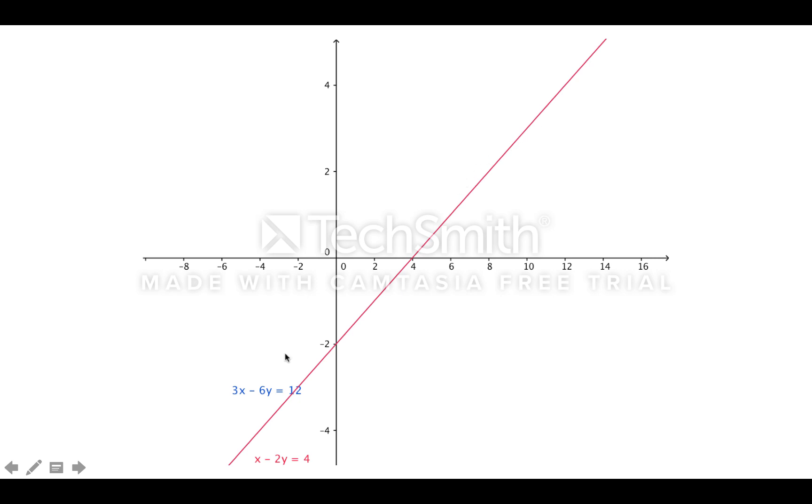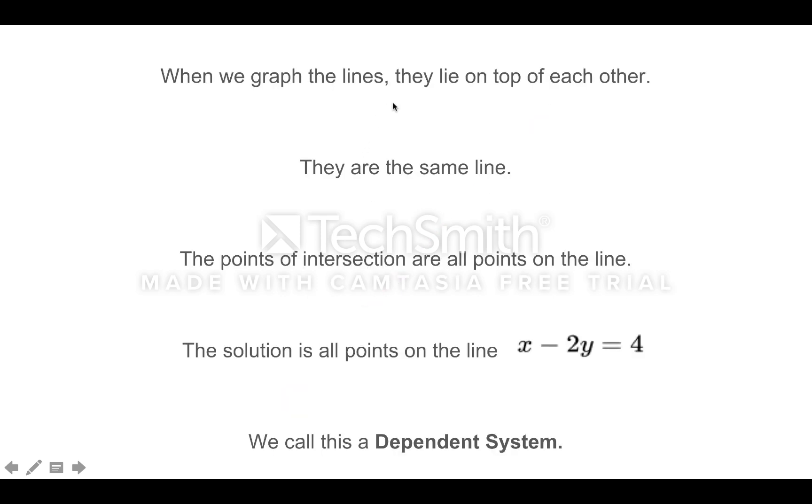The line x minus 2y equals 4 lies right on top of that. Remember, we're trying to figure out where these two lines intersect. They live in the same place. They live right on top of each other. They are the same line, in fact. So where do they intersect?